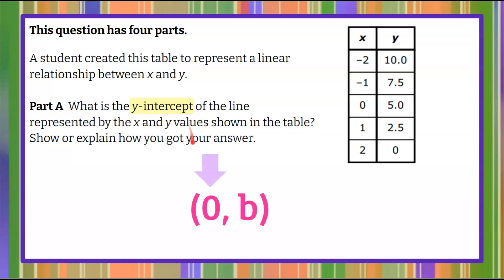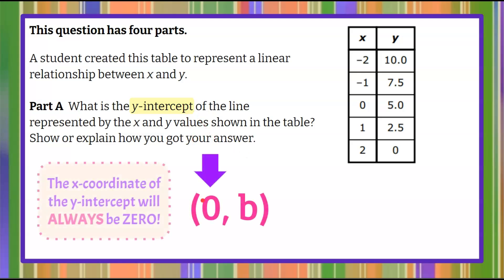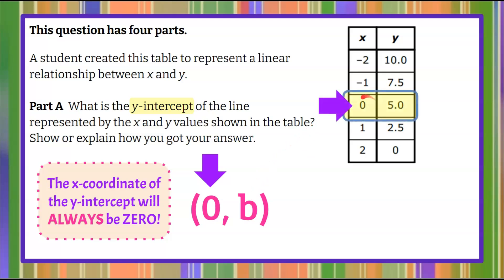Understanding that the y-intercept is the ordered pair (0, b), where the x-coordinate of the y-intercept will always be 0. So anytime our x-coordinate of an ordered pair is 0, the y-coordinate is b, or our y-intercept. So we look at our table, and here is where x is equal to 0. Our output y is 5, so that tells us that b, our y-intercept, is 5.